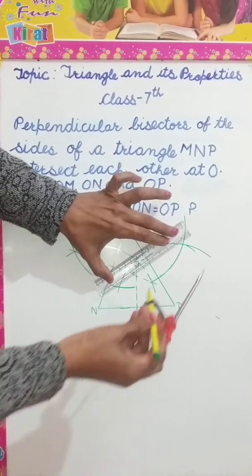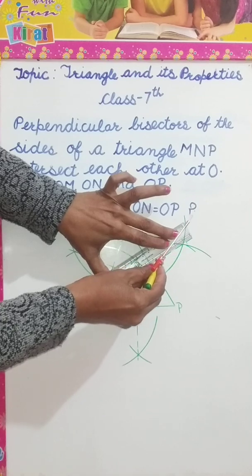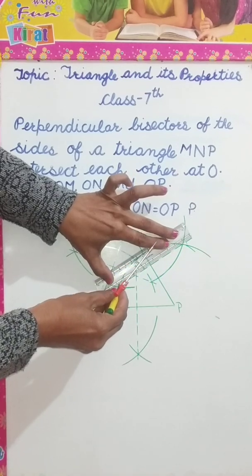These are the intersecting points. Join with dotted lines.